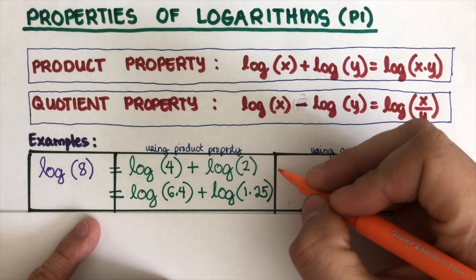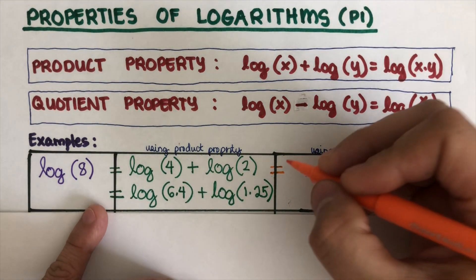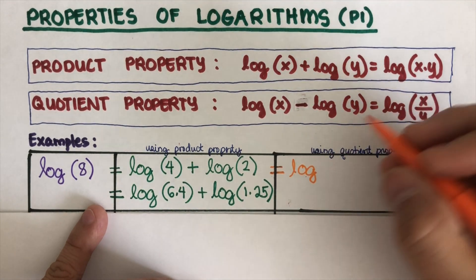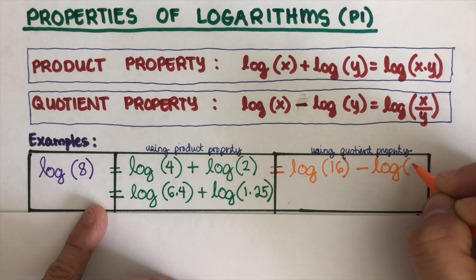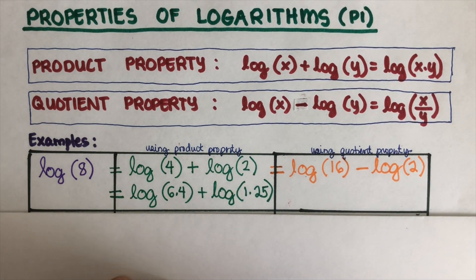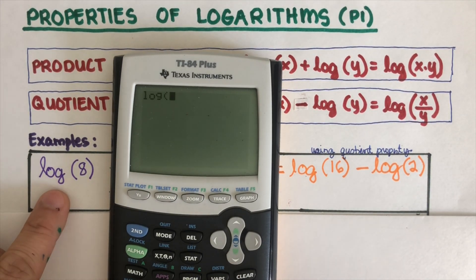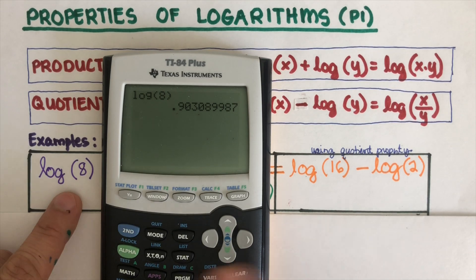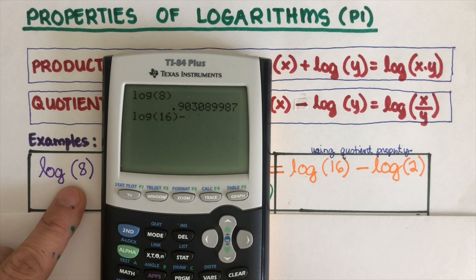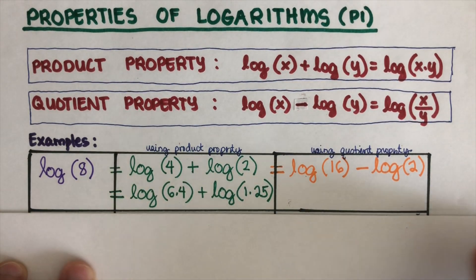Now let's use the quotient property to express log of 8. When I divide two numbers to get 8, I can write log of 16 minus log of 2, since 16 divided by 2 is 8. Let's check this with the calculator: log of 16 minus log of 2 gives the same answer as log of 8 — the answers match, so these are equivalent expressions.